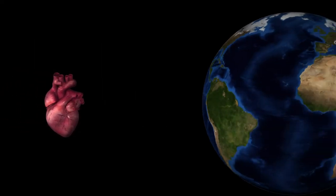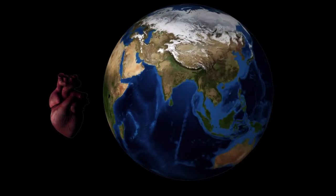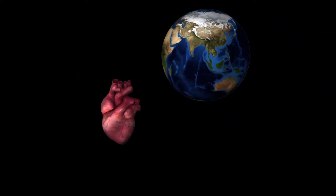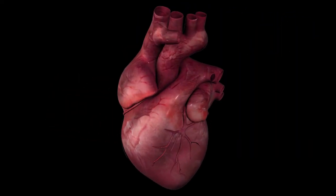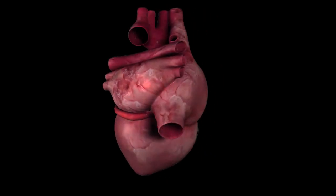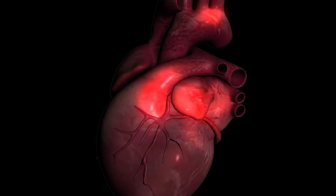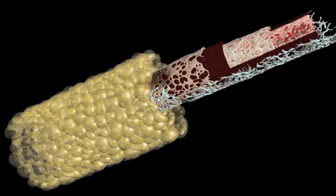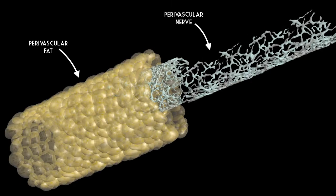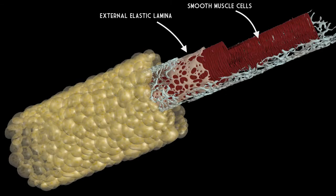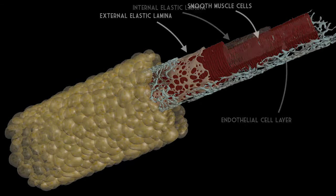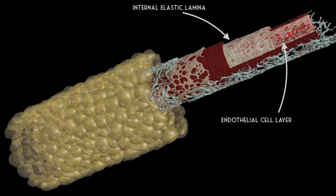Cardiovascular disease is one of the leading causes of mortality worldwide. Its chief underlying cause is atherosclerosis, a condition characterized by chronic inflammation of the arterial wall. The wall of an artery consists of three layers: the adventitia, the media, and the intima, where the early stages of atherosclerosis begin.